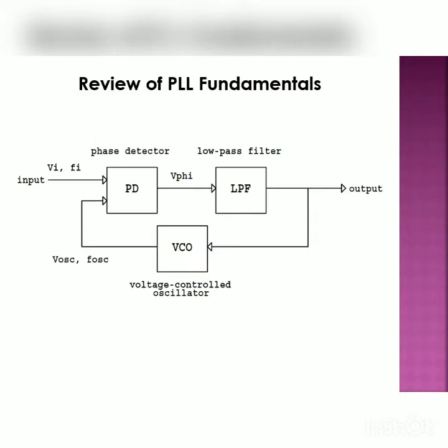PLL stands for phase lock loop. Analog as well as digital phase lock loop ICs are available. The phase lock loop consists of mainly three blocks: first is the phase detector, also called the phase comparator or phase discriminator; second is the low pass filter; and third is the voltage controlled oscillator.